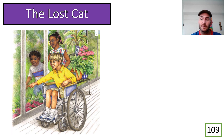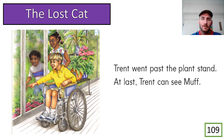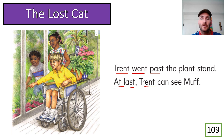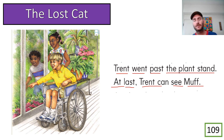They are smiling — I think that means something good. Okay guys, keep reading, you start and then we will follow with Mr. Pan. Let's read together — Trent went past the plant stand. At last, Trent can see Muff! They found Muff! Where is Muff and what is Muff doing?